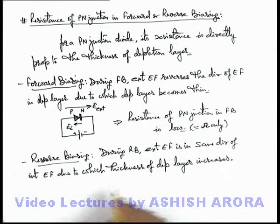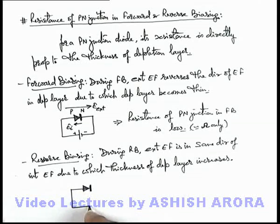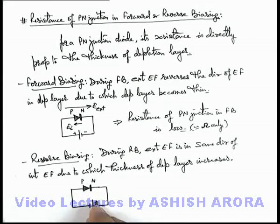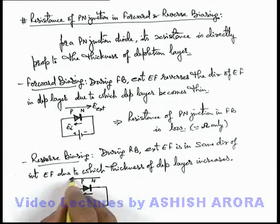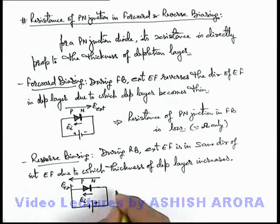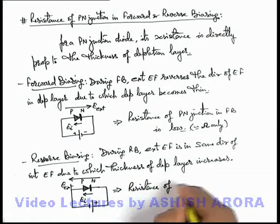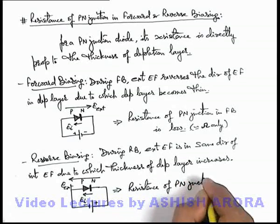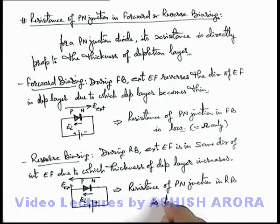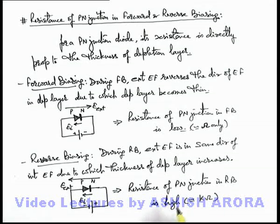The thickness of the depletion layer increases. In a circuit diagram, we can see that the p side of the diode is connected to the negative terminal of a battery and the n side to the positive terminal. Here the internal electric field is in the direction from n to p, and the external field also exists from n to p, due to which the depletion layer becomes thick. Therefore, the resistance of the p-n junction in reverse biasing is high — generally of the order of kilo-ohms or more, depending on the conductivity of the intrinsic substrate used for making the p-n junction.